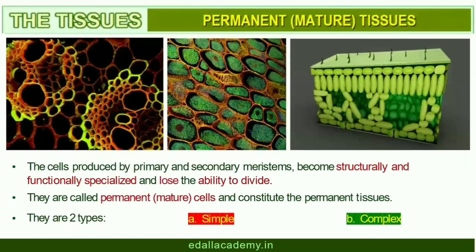Following divisions of cells in both primary and secondary meristems, the newly formed cells become structurally and functionally specialized and lose the ability to divide. Such cells are termed permanent or mature cells and constitute the permanent tissues. During the formation of the primary plant body, specific regions of the apical meristem produce dermal tissues, ground tissues, and vascular tissues.